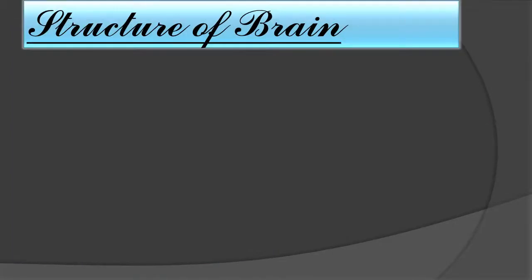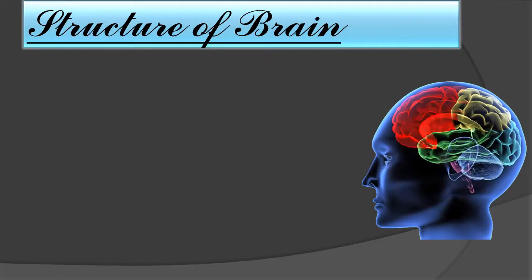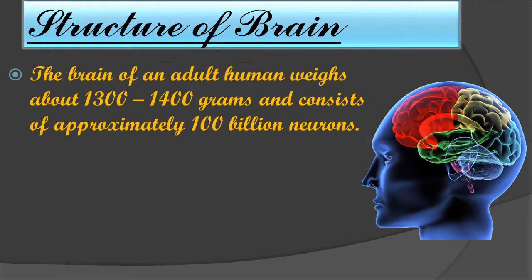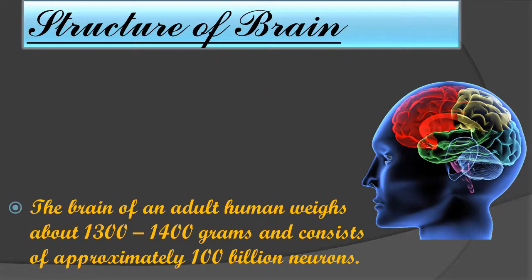Now let us understand the structure of the brain. The brain of an adult human weighs about 1300 to 1400 grams and consists of approximately 100 billion neurons.